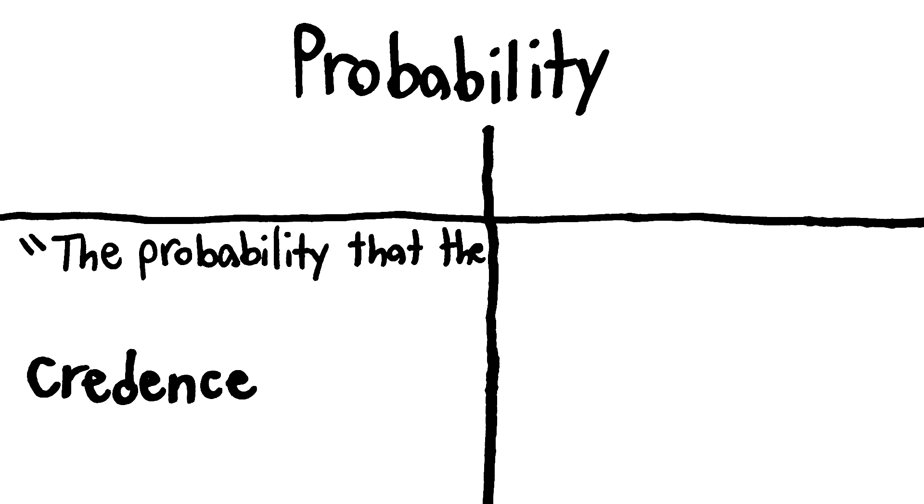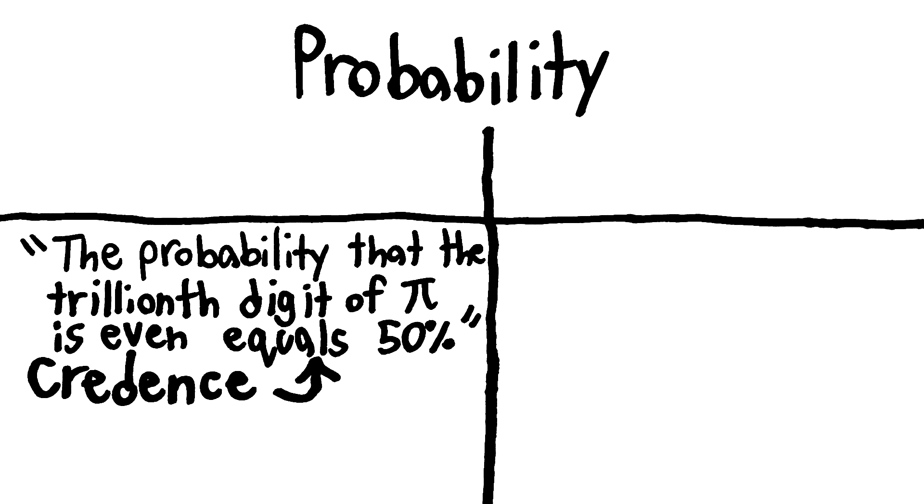If you say there's a 50% chance that the trillionth digit of pi is even, that just means you're unsure about the trillionth digit of pi. That doesn't mean the trillionth digit of pi could actually be different. Mathematics dictates whether it's even or odd. But to you personally, there's a 50-50 chance that it's even, assuming you haven't looked it up.